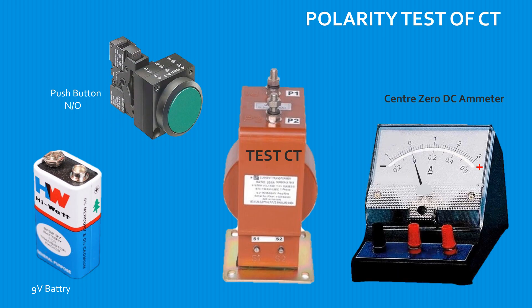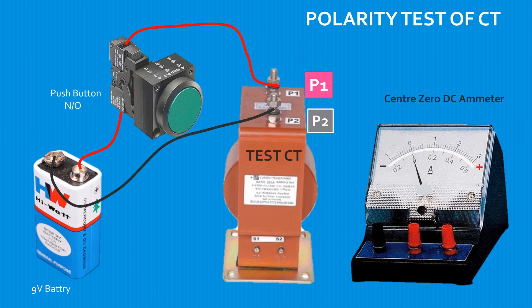Identify and mark permanently the P1 and P2 terminals on the CT to be tested for polarity. Connect the positive terminal of the 9-volt cell to the P1 terminal of the test CT through a test push button. Connect the negative terminal of the 9-volt cell to the P2 terminal of the test CT directly.